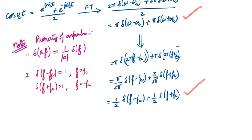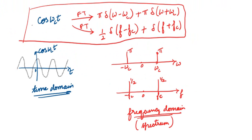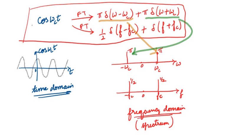Now we will plot the spectrum. The results are: the Fourier transform in the form of ω is π·δ(ω − ωc) + π·δ(ω + ωc), and in the form of f is (1/2)·δ(f − fc) + (1/2)·δ(f + fc). Only two frequency components exist. At ω = ωc, δ = 1 so the magnitude is π. At ω = −ωc, the magnitude is also π.